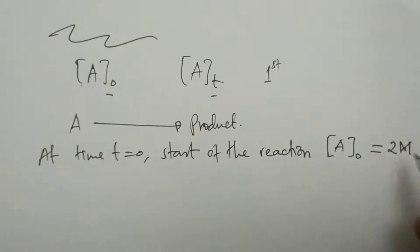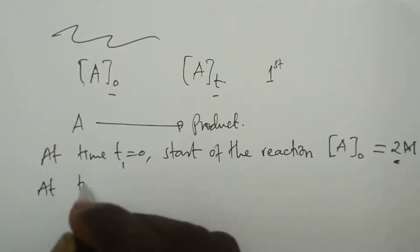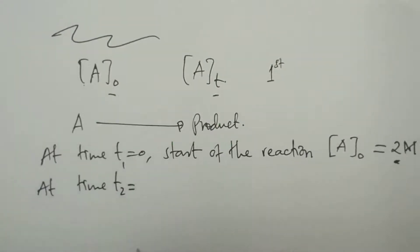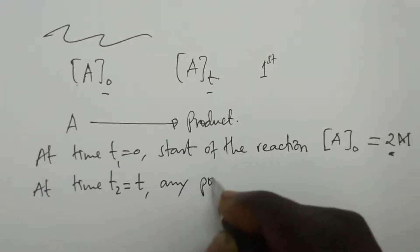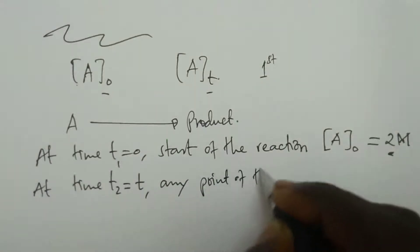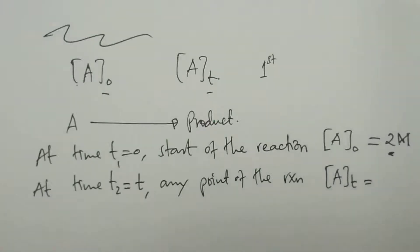As the reaction proceeds, this concentration will tend to decrease. At time T2, which is any time T, at any point of the reaction, we have another concentration, concentration AT. AT can be any amount X.